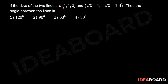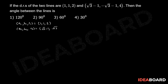If the DRs of two lines are 1, 1, 2 and (√3 − 1), (−√3 − 1), 4, then the angle between the lines is: let the DRs of the two given lines be a1, b1, c1 = 1, 1, 2 and a2, b2, c2 = (√3 − 1), (−√3 − 1), 4. Let θ be the angle between these two lines.